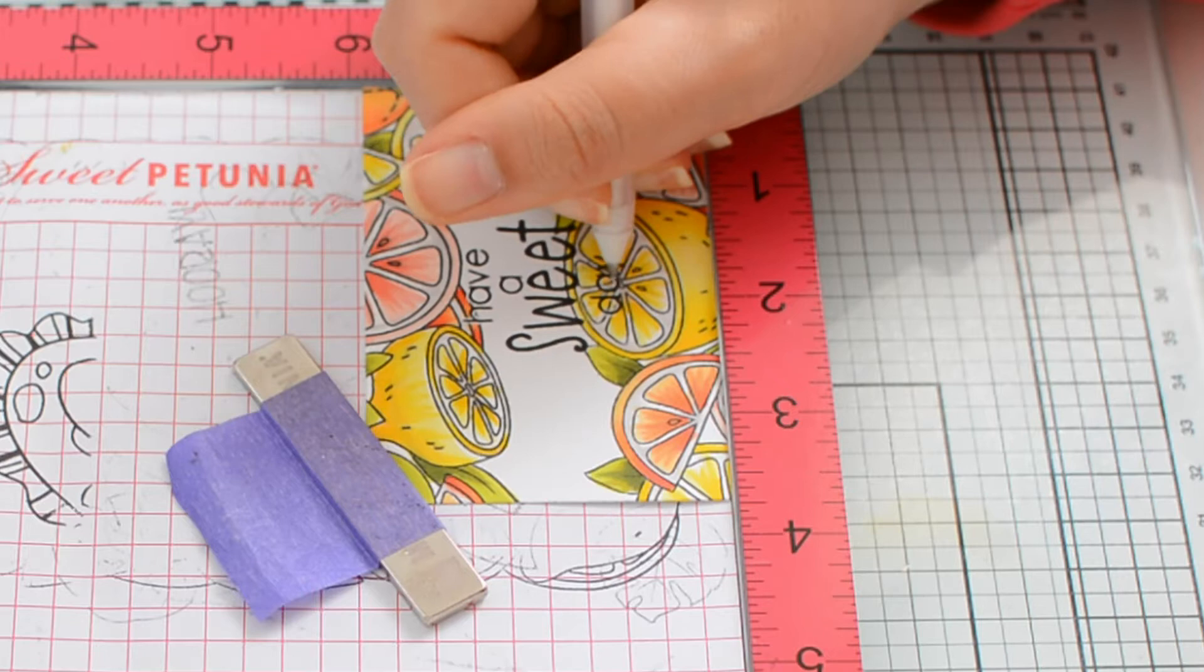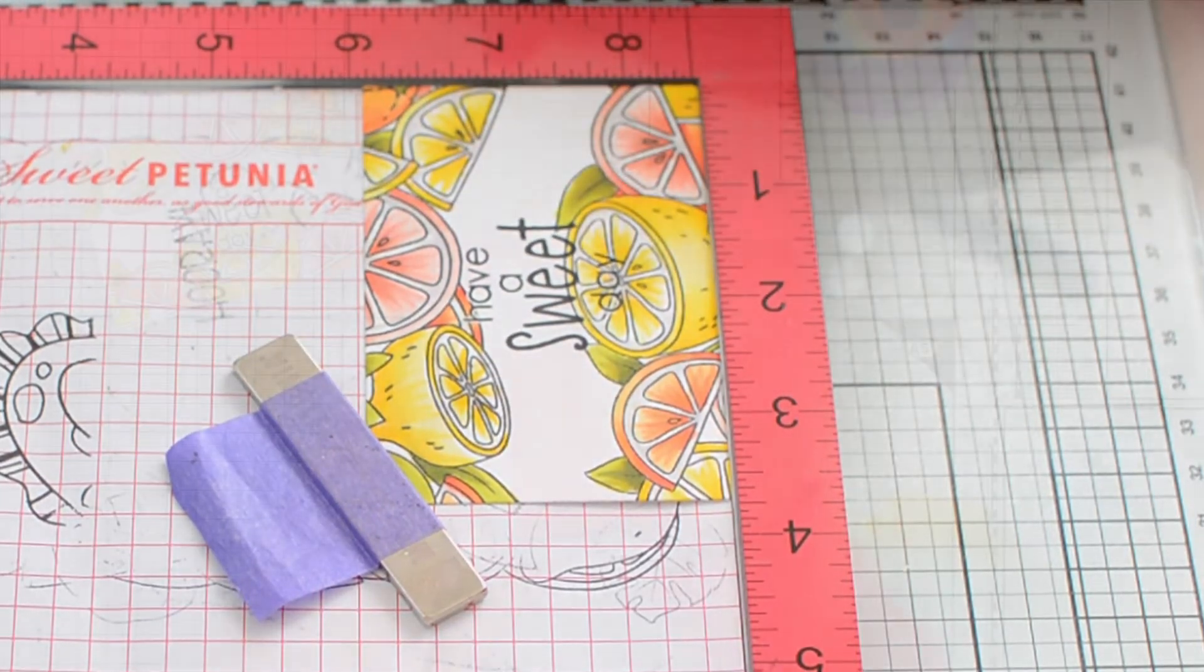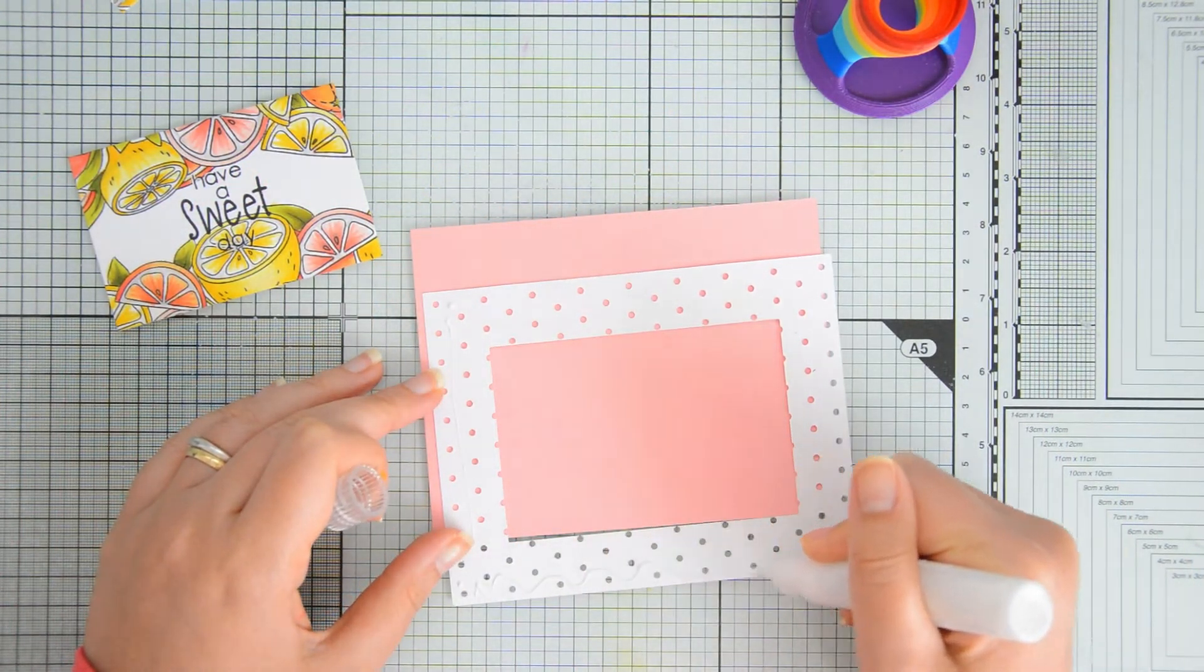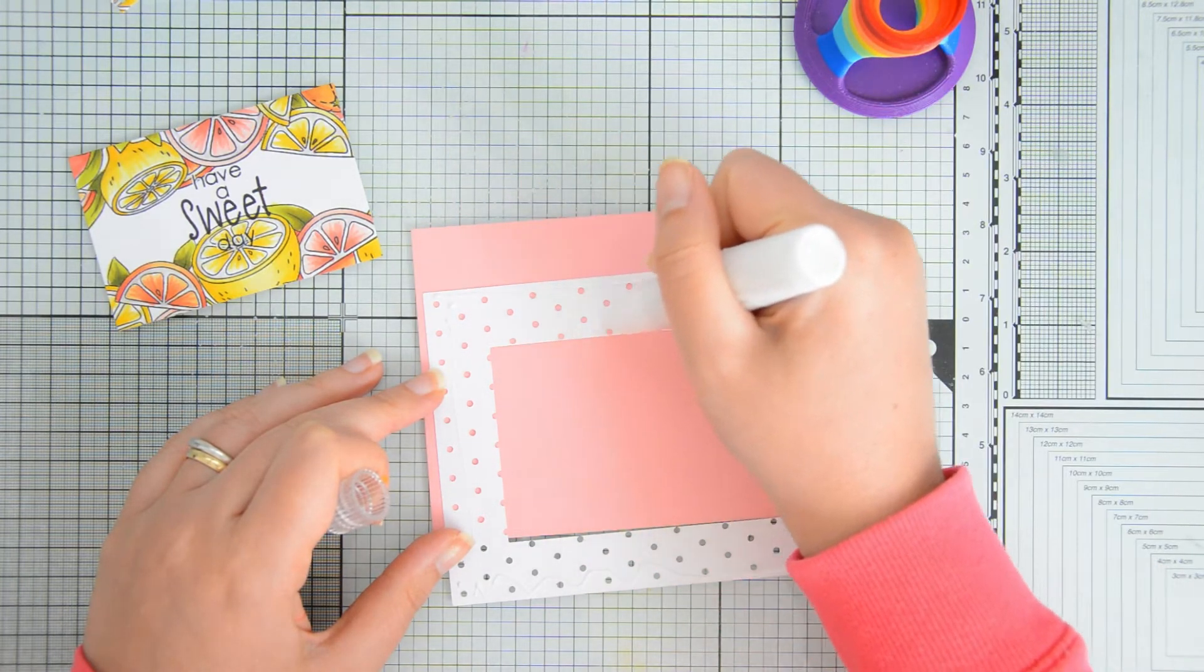In order for the sentiment to pop out a little bit more where it overlaps with the images, I went in with a Sakura jelly roll pen and I outlined the sentiment, and then I could go ahead and adhere everything.